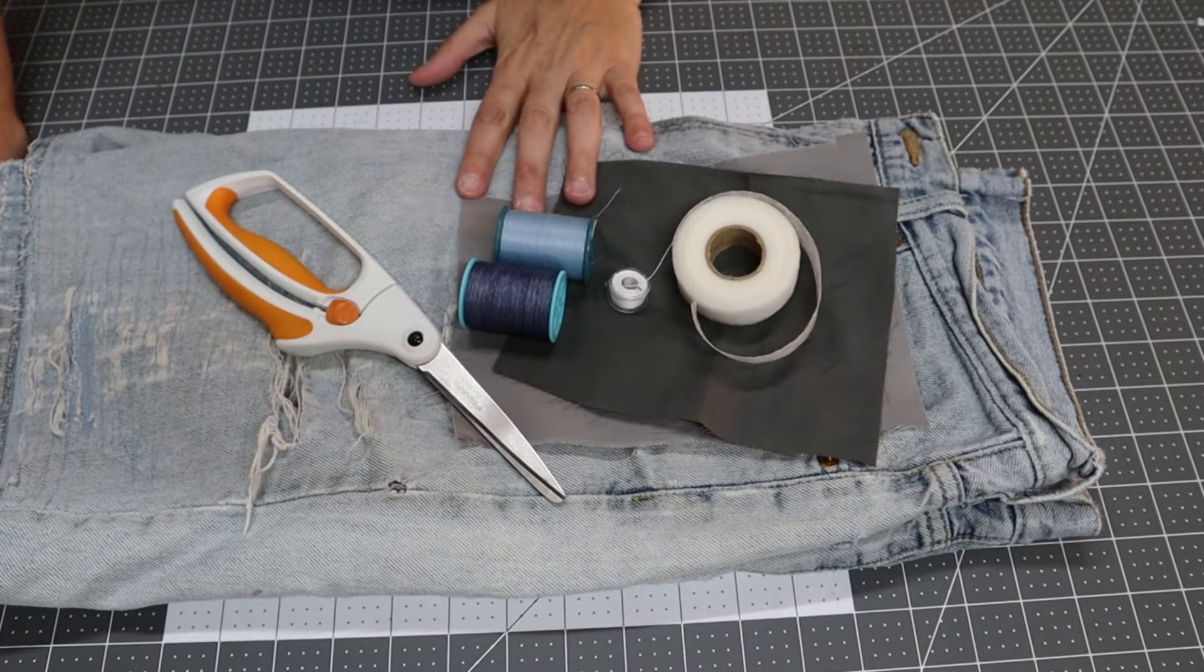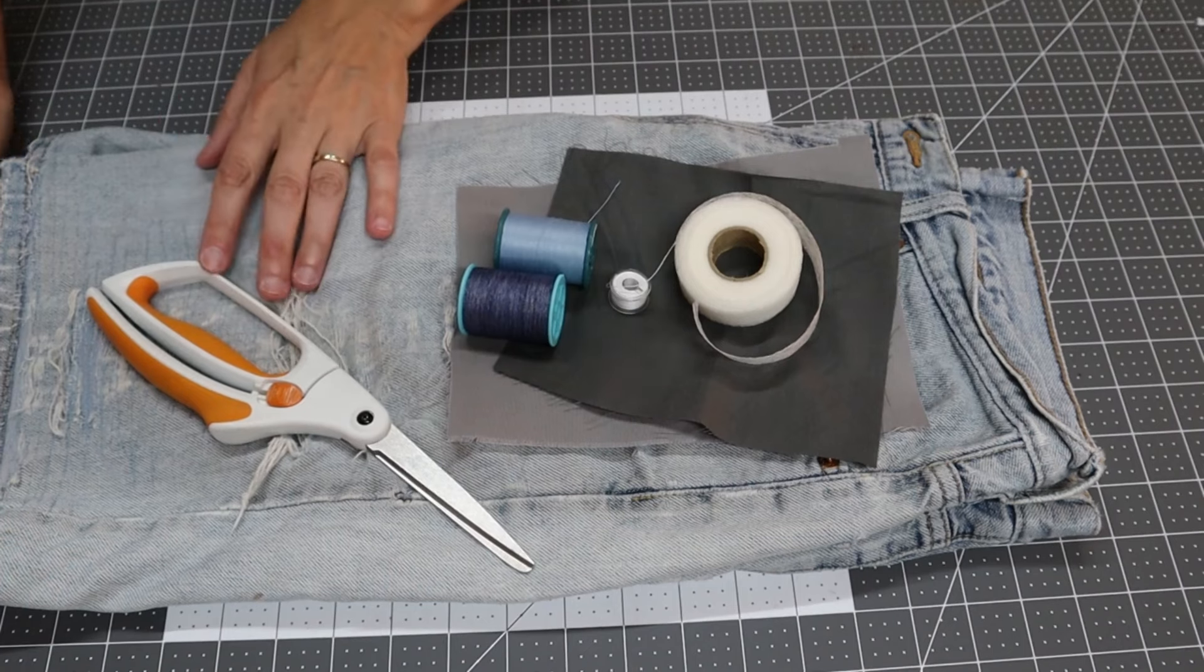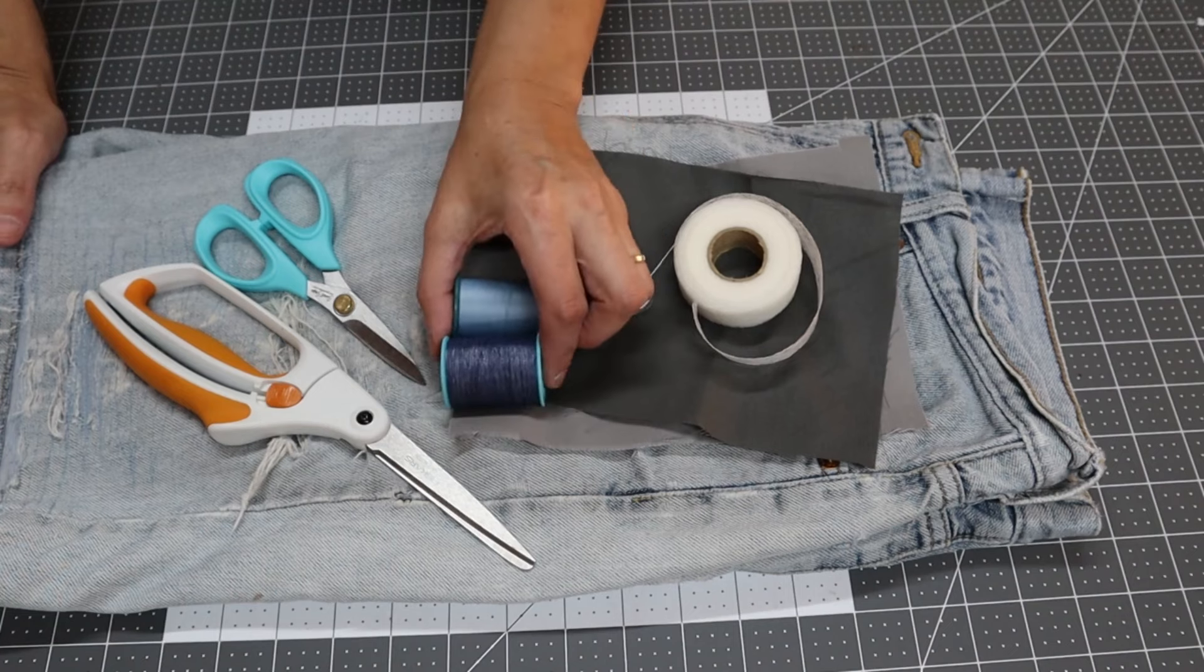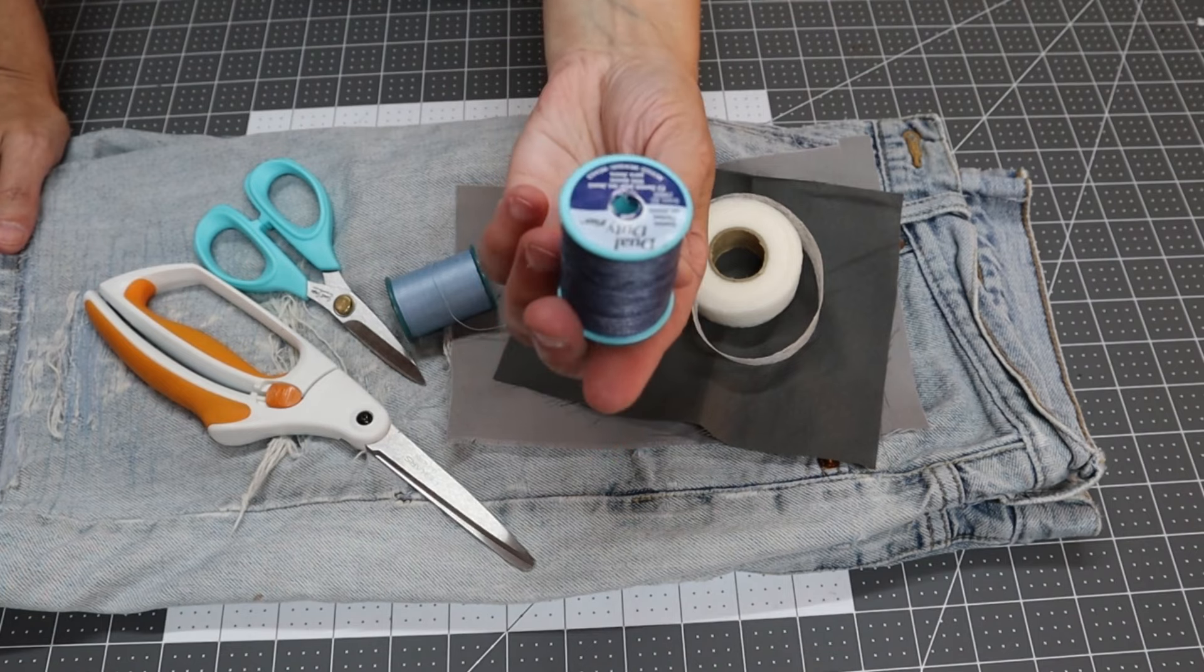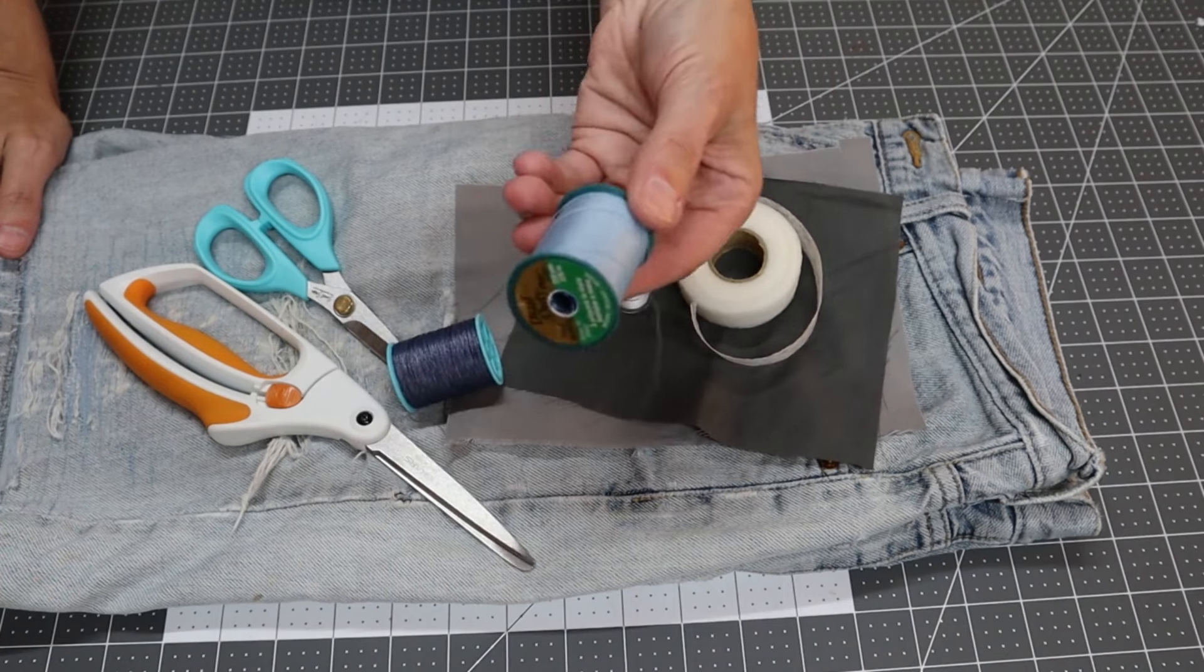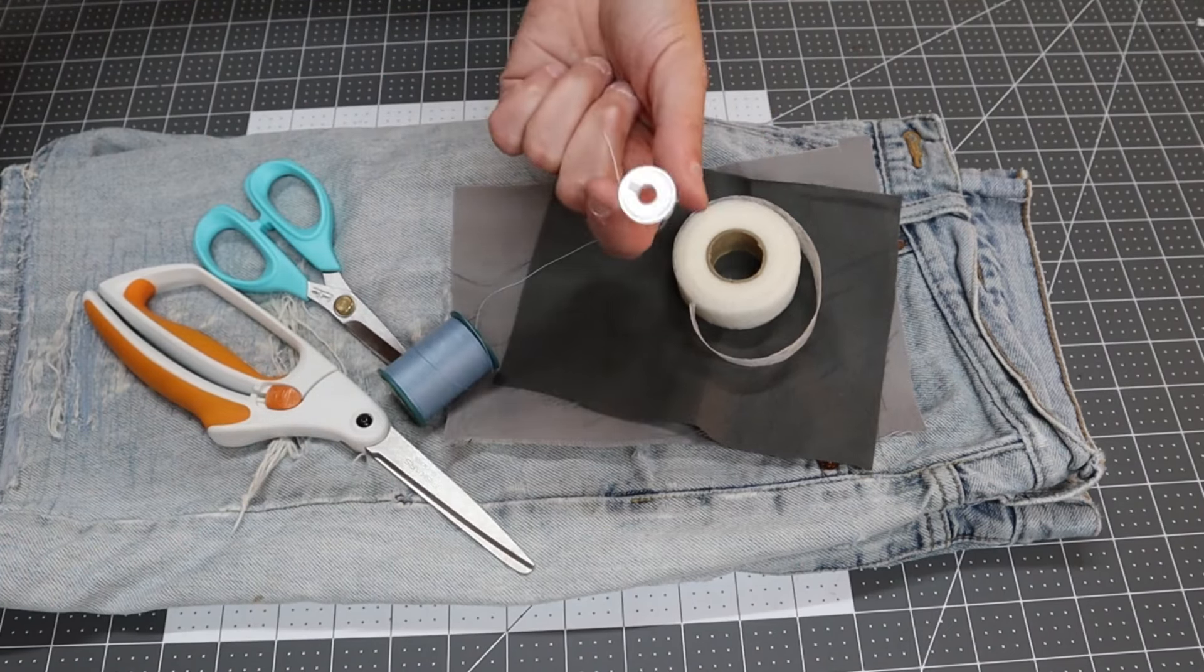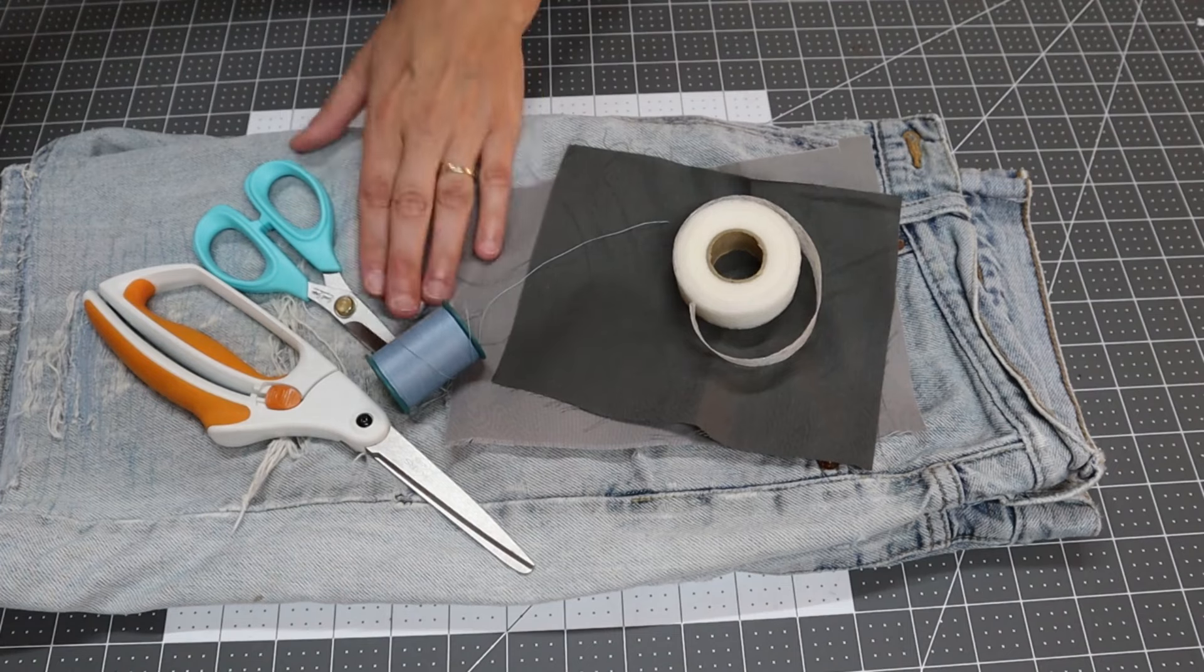These are some of the items that we are going to need. We have our ratty jeans, a pair of scissors and maybe even a smaller pair to cut some of these threads away. You're going to want some thread that matches. I buy this heavy-duty Coats and Clark denim thread, and it works pretty good.